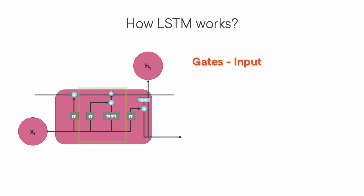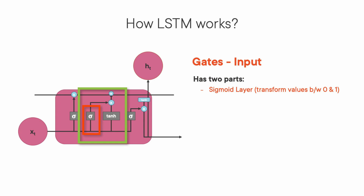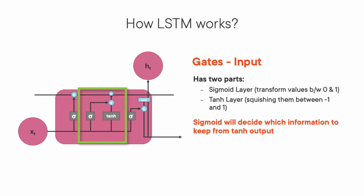To update the cell state, we have the input gate. In this layer, there are two parts: one is the sigmoid function and the other is the tanh function. The sigmoid function decides which values to let through by transforming them to be between 0 and 1 — 0 means not important and 1 means important. Then the tanh function gives weightage to the values which are passed, deciding their level of importance by squeezing them between minus 1 and 1. We then multiply the tanh output with the sigmoid output — the sigmoid output decides which information is important to keep from the tanh output.